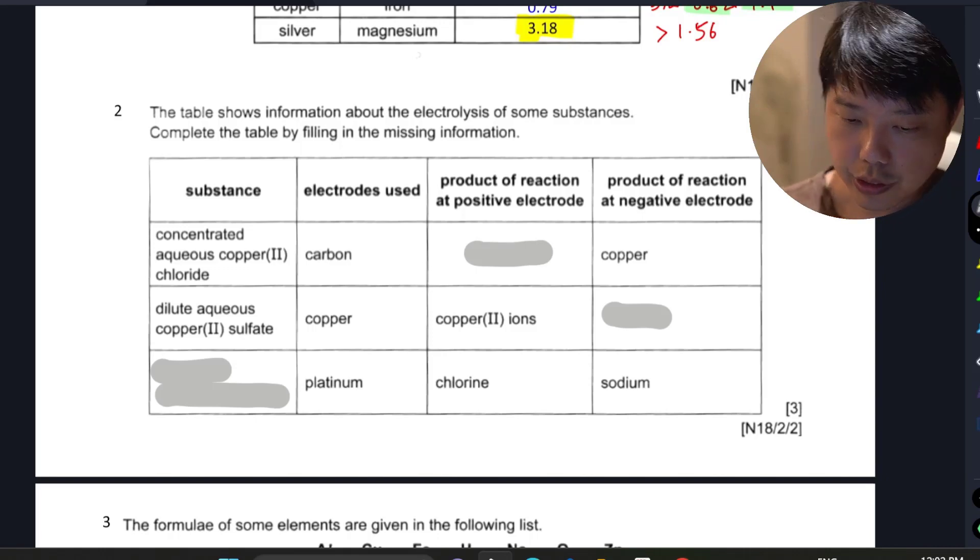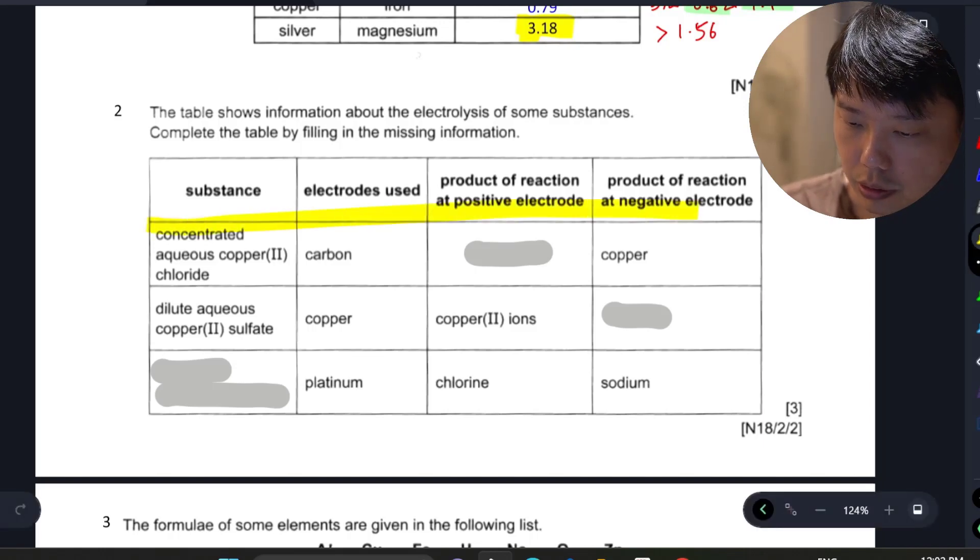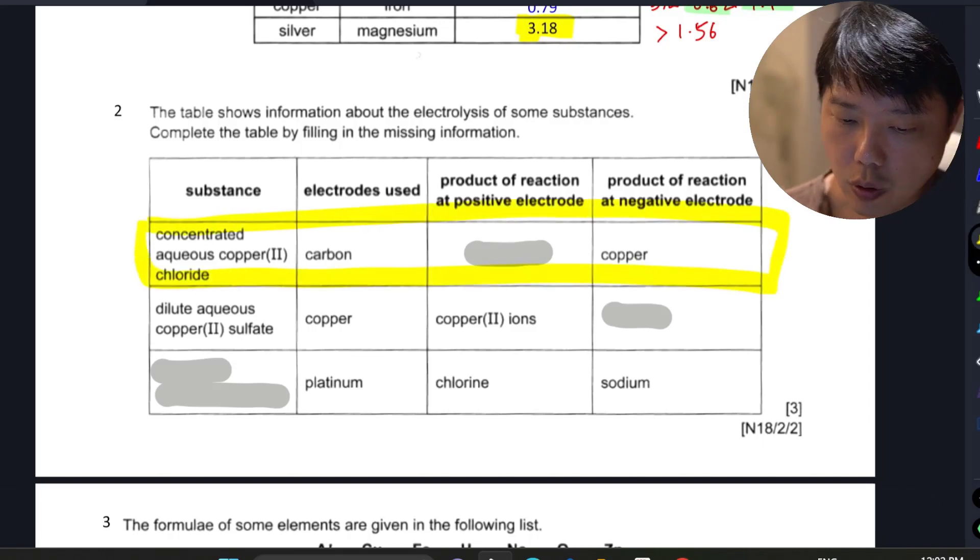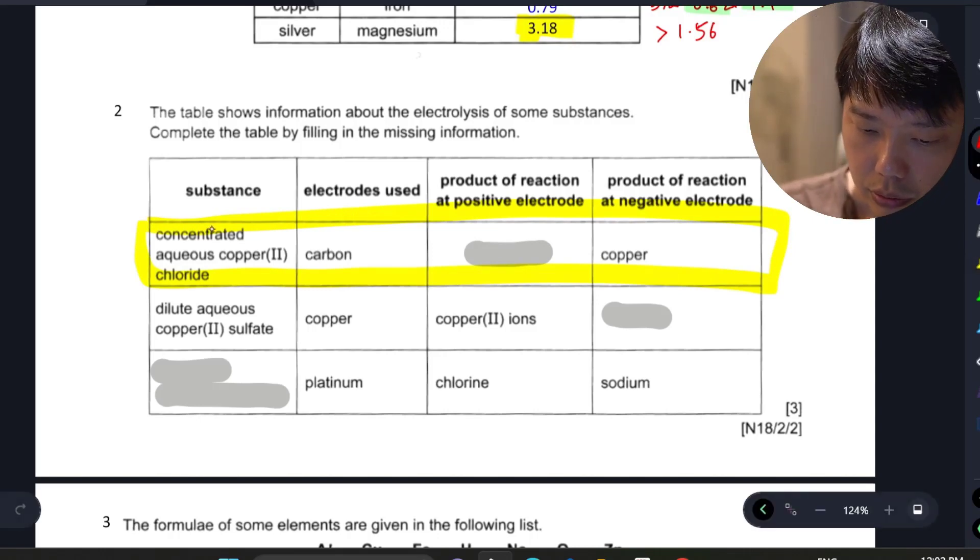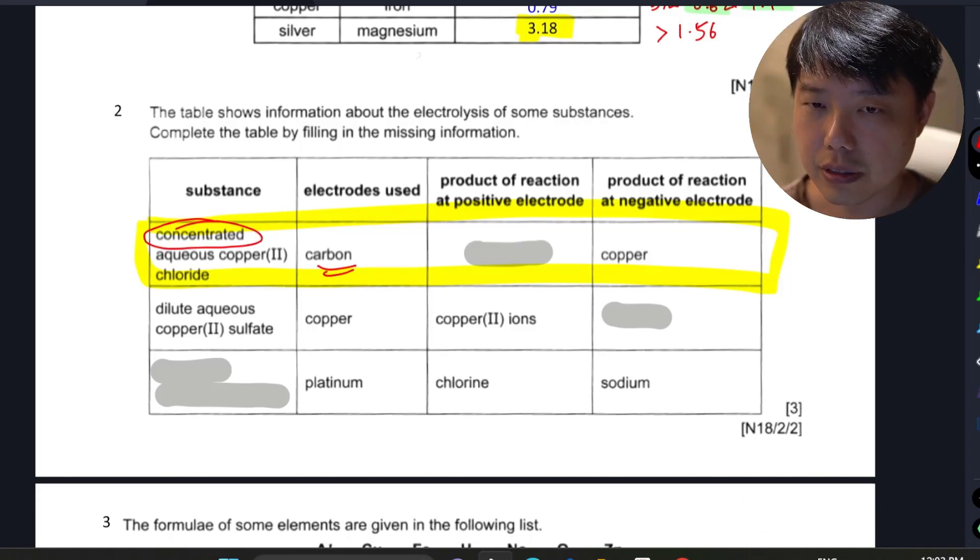If you look at the question itself, the first row that we have, let's focus on this first row. We have concentrated aqueous copper chloride. The keyword here is concentrated, because the electrode used is inert, so it doesn't really react. When we have concentrated copper chloride, it only affects the anion that is going to be produced.